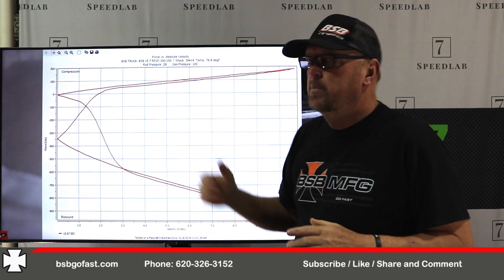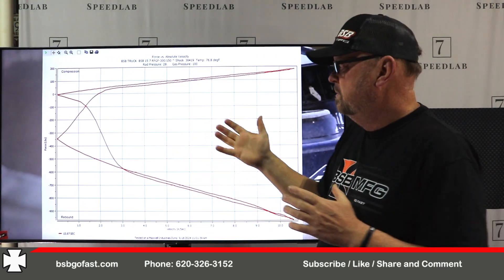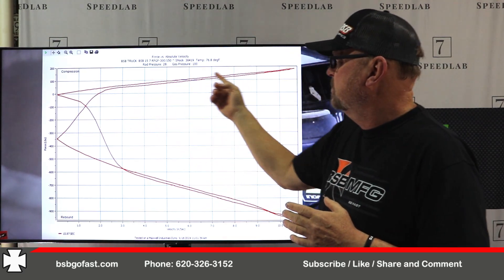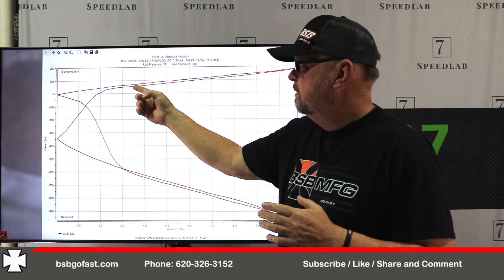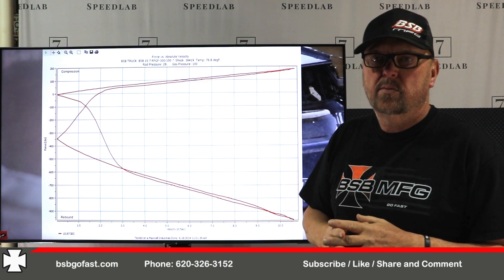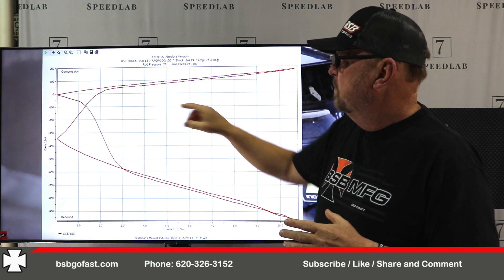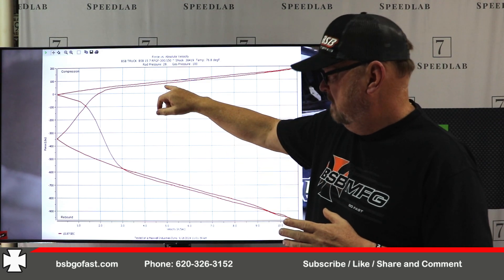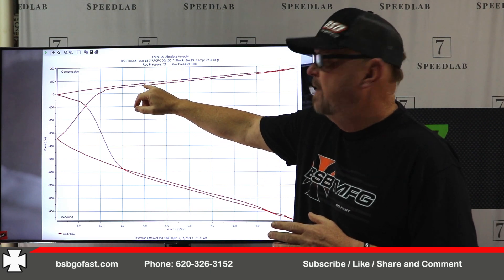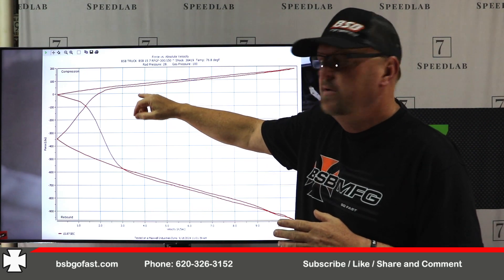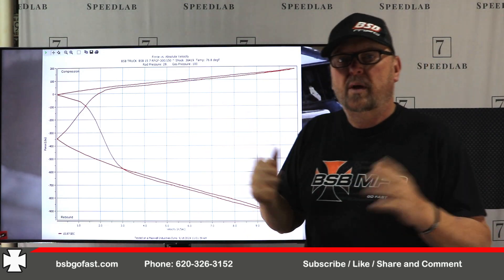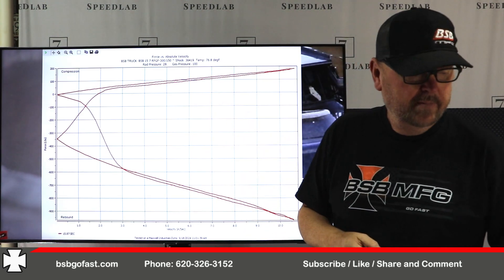This is the both chart — we'll cover this in detail. But you see it has compression open, compression closed, rebound open, and rebound closed. They take, say at four inches, these two numbers and average them together, and it falls in between there — that's why they call it the average chart.